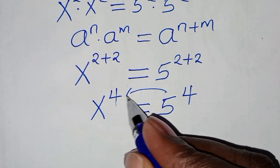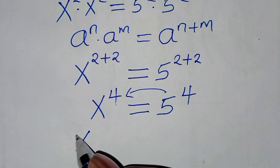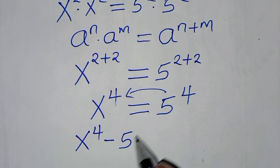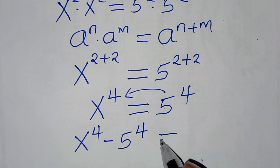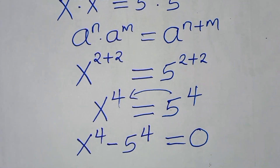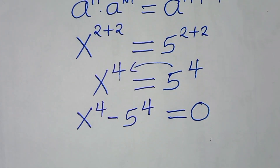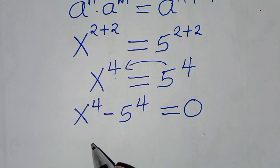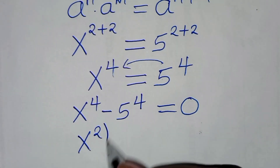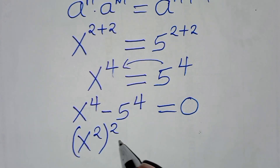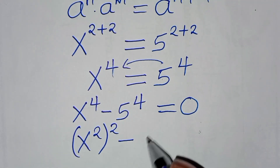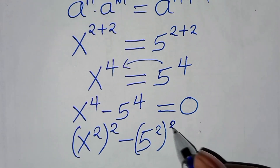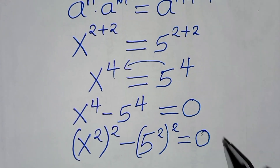Let's take 5 to power 4 on the left-hand side, so that we have x to power 4 subtract 5 to power 4, equal to 0. We can express x to power 4 as x to power 2 raised to power 2, subtract 5 to power 4, which we can express as 5 to power 2 raised to power 2, equal to 0.